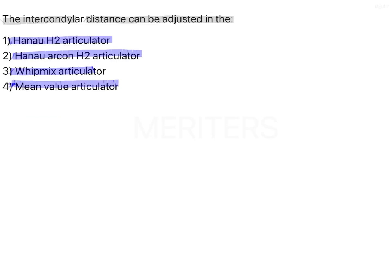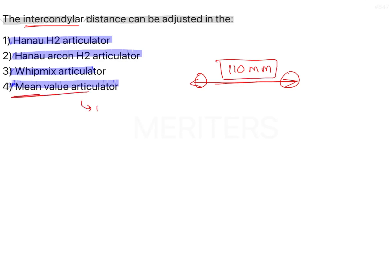Let me tell you what intercondylar distance is. It is the distance between the two condylar assemblies on the articulator, which is 110 mm in the Mean Value Articulator according to Bonneville's theory. This distance is fixed between the two condylar parts on the upper member, constant at an average value of 110 mm in the Mean Value Articulator.